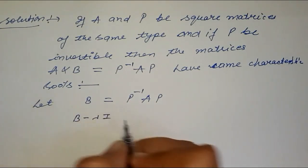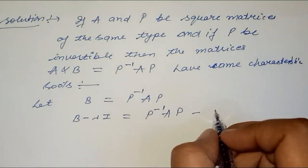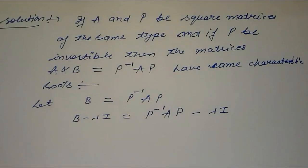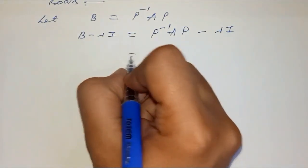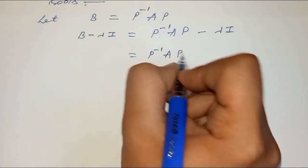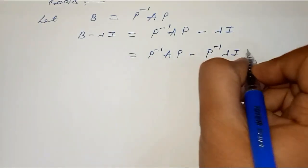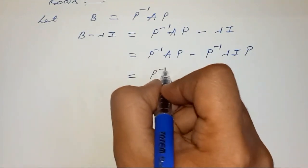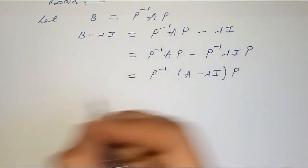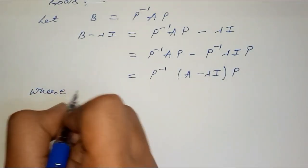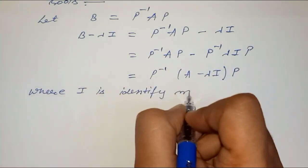B minus lambda I equals P inverse AP minus lambda I. We arrange this equation: that equals P inverse AP minus P inverse lambda I P, which equals P inverse (A minus lambda I) P, where I is the identity matrix.